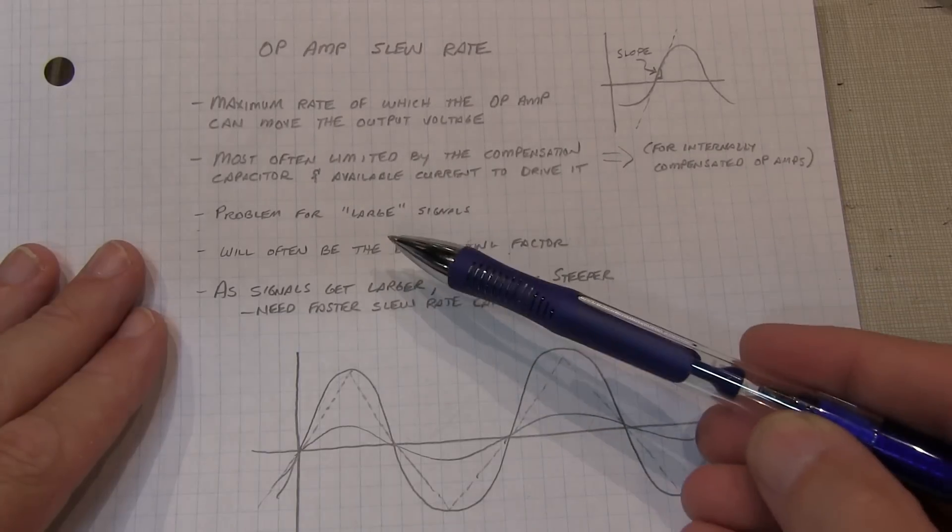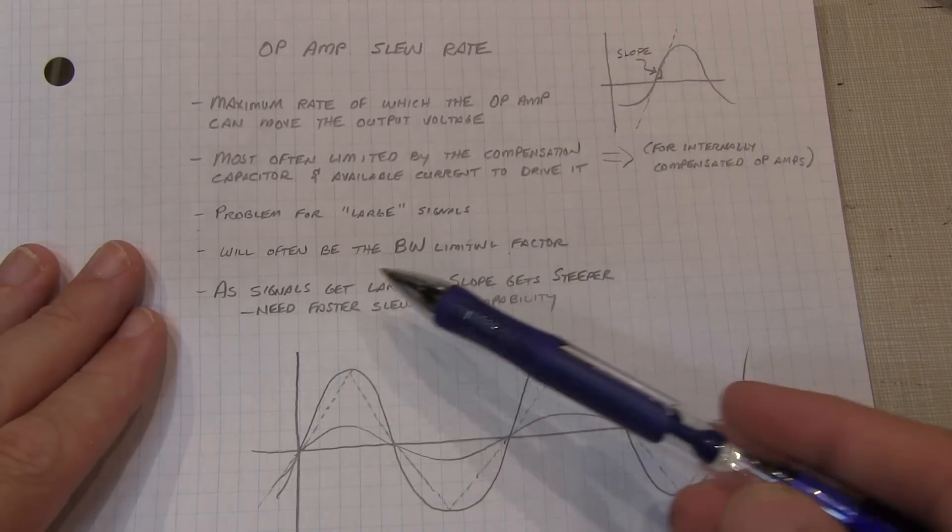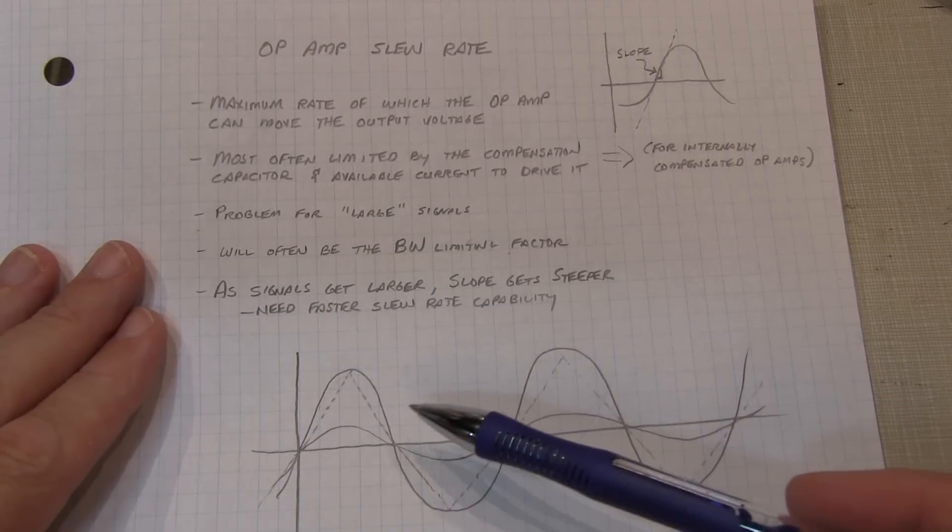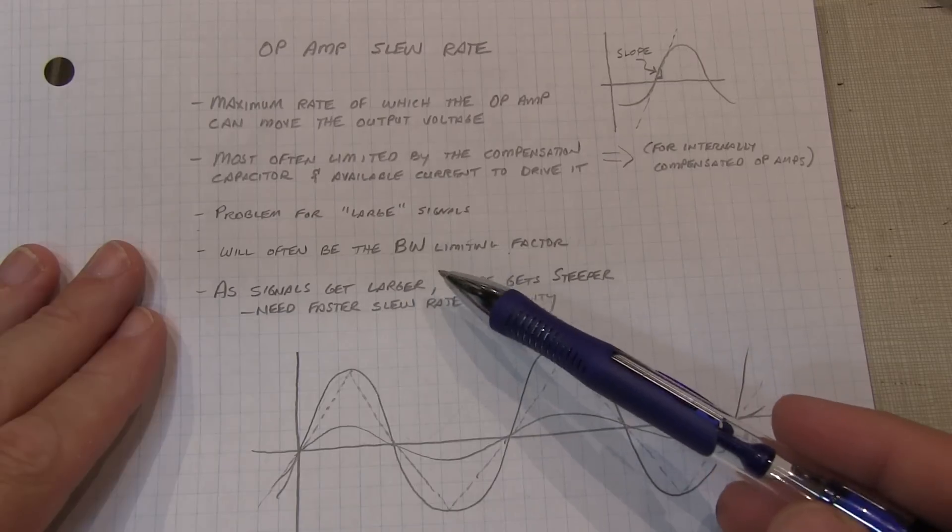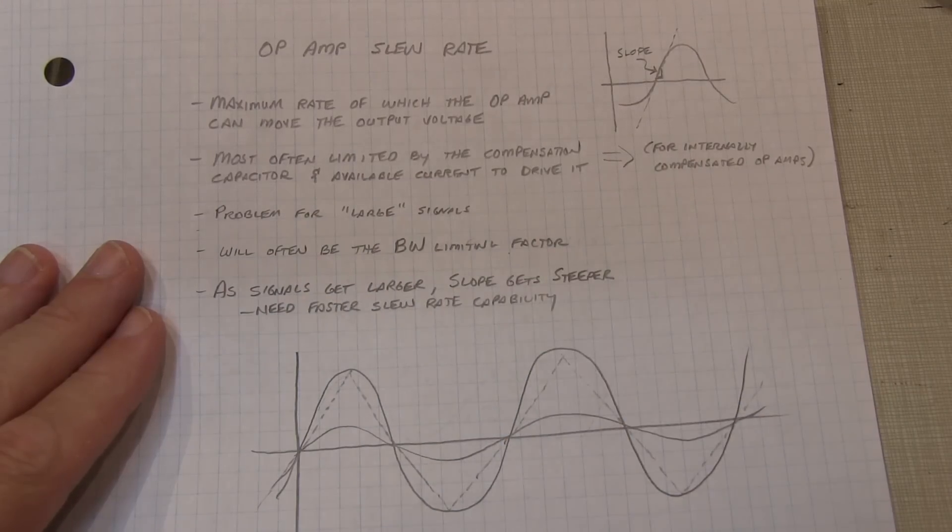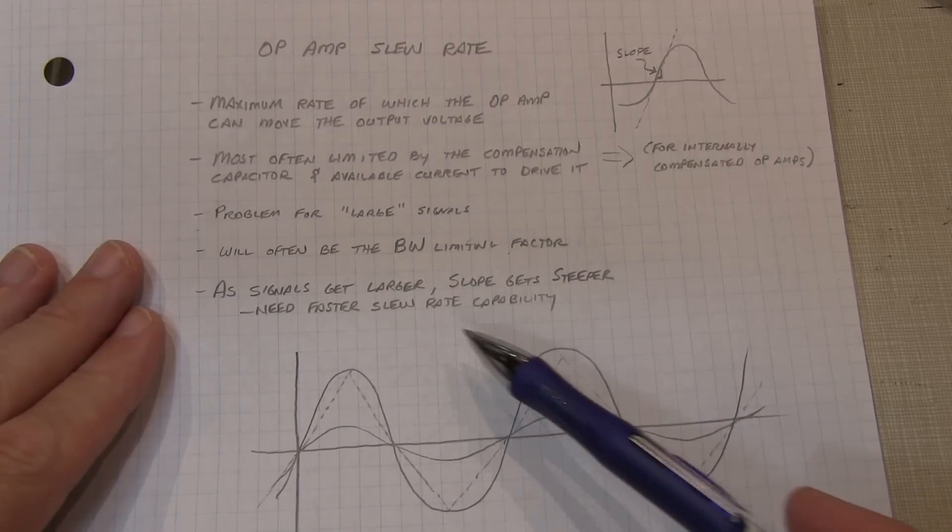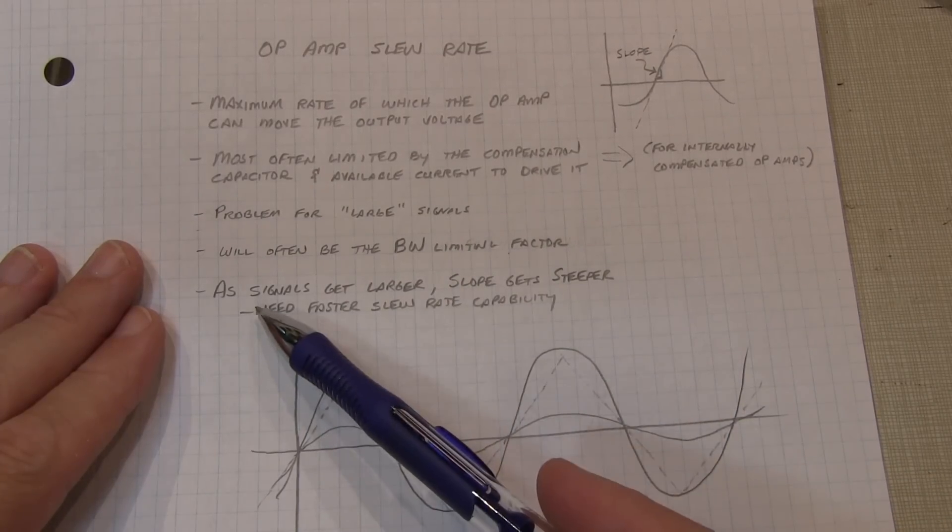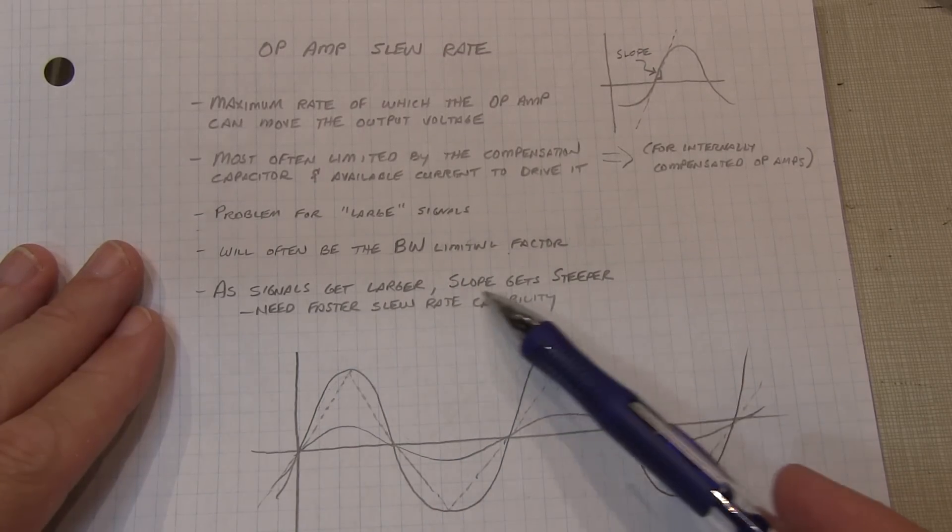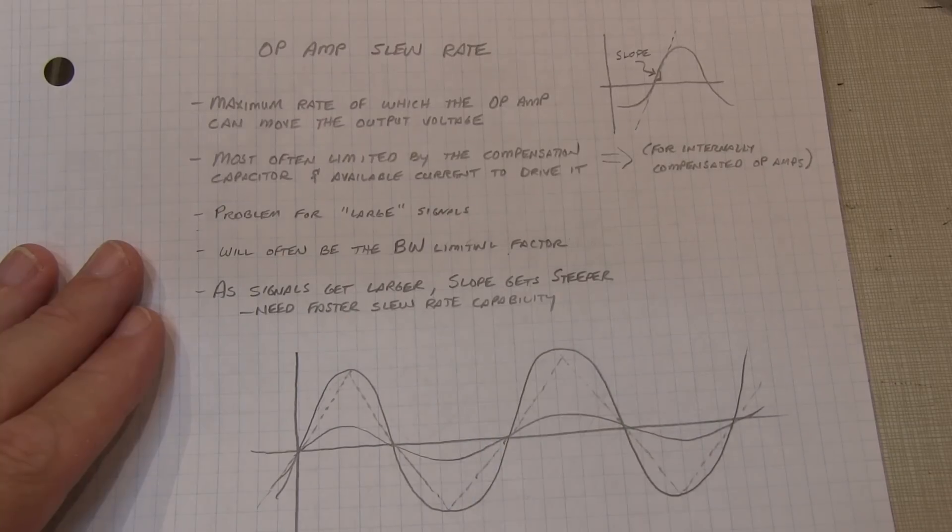So oftentimes the slew rate limit of the op amp will become the bandwidth limiting factor, even before you've essentially run into the gain bandwidth product, especially for larger signals. And as we saw in the scope, as signals get larger, the slope gets steeper, and we need a faster slew rate.